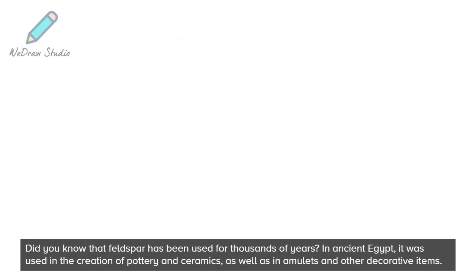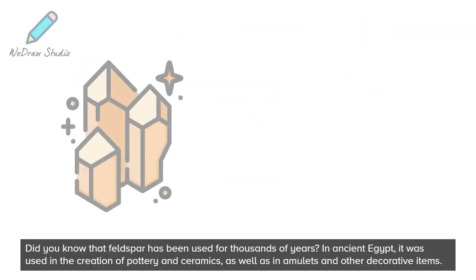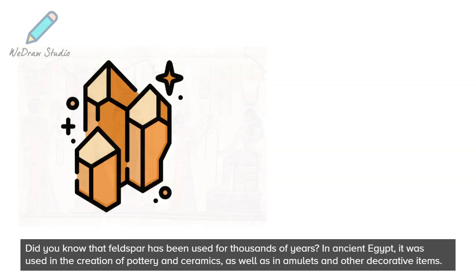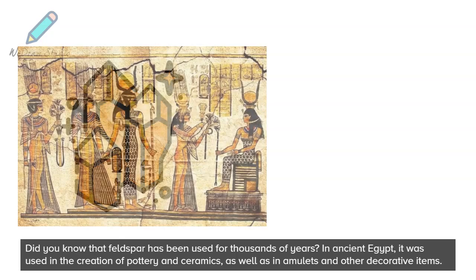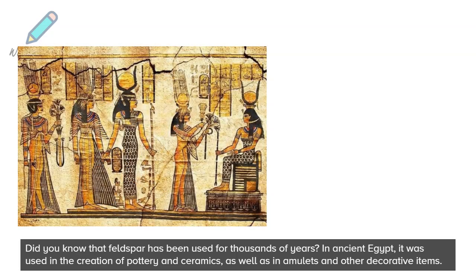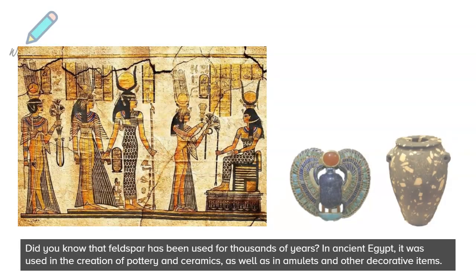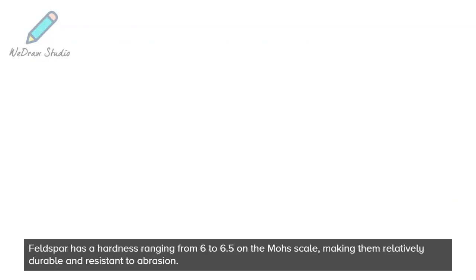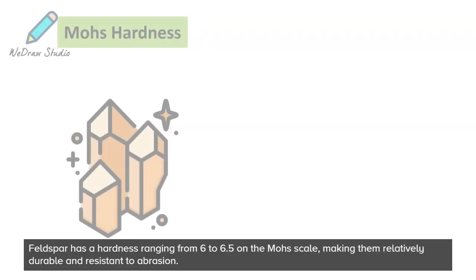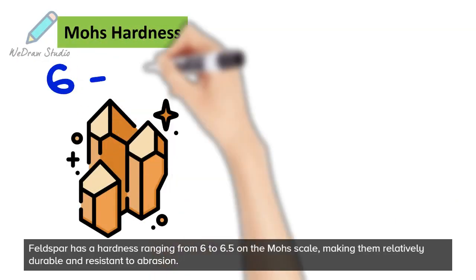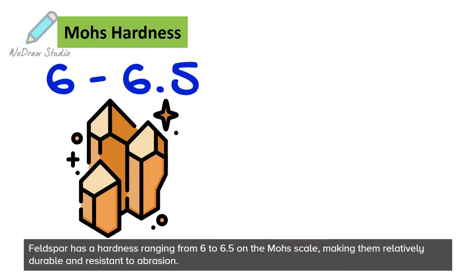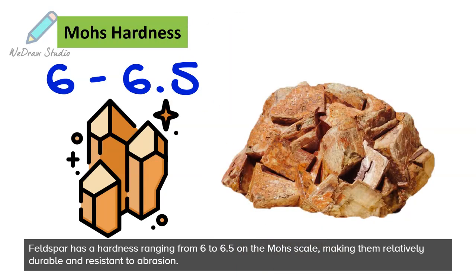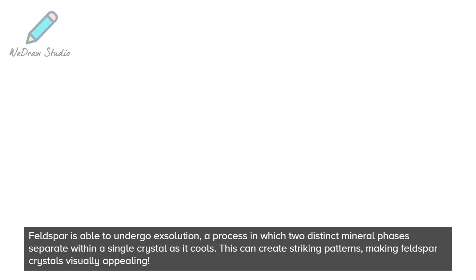Did you know that feldspar has been used for thousands of years? In ancient Egypt it was used in the creation of pottery and ceramics, as well as in amulets and other decorative items. Feldspar has a hardness ranging from 6 to 6.5 on the Mohs scale, making it relatively durable and resistant to abrasion.